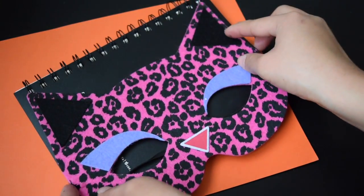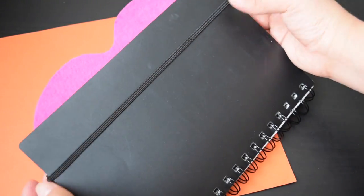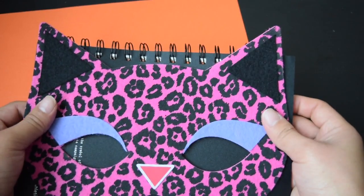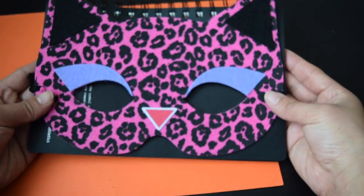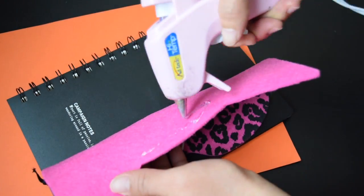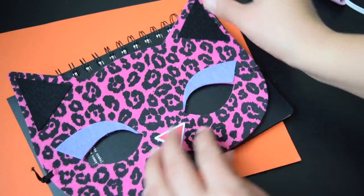Attach the mask like this and secure the back part of the mask using hot glue to keep it in place. That's basically it, we're done.